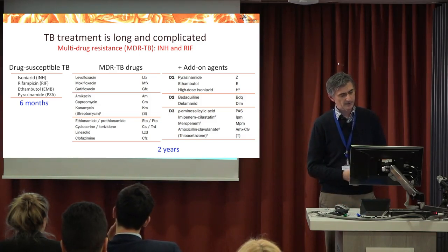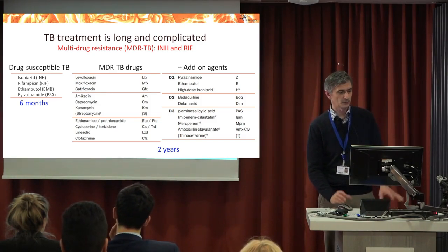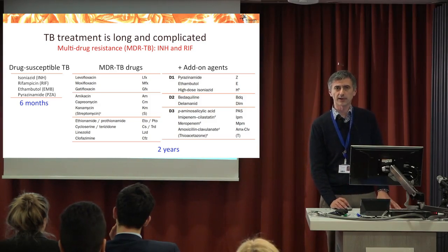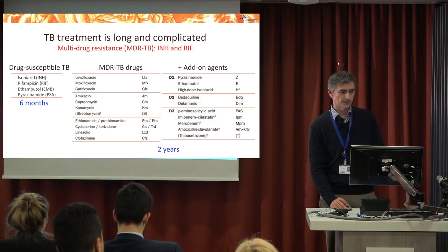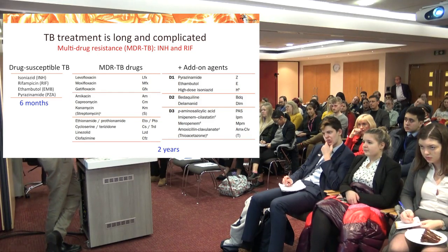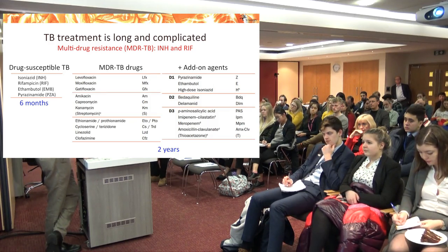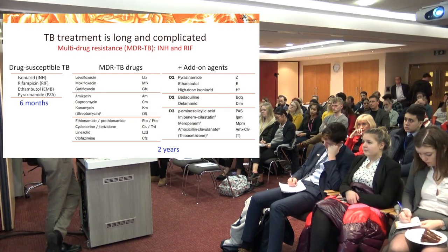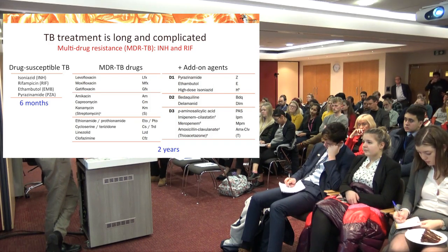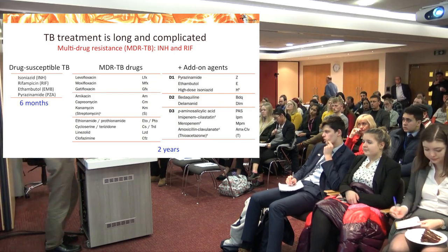Nothing in TB is simple or straightforward. Even so-called drug-susceptible TB treatment is complicated — it lasts six months and requires four drugs. If infection is resistant to the two main drugs, isoniazid and rifampicin, it becomes multi-drug resistant, requiring many more drugs, much higher costs, much higher toxicities, and treatment lasting two years or longer. These are major issues that still unfortunately need to be addressed.